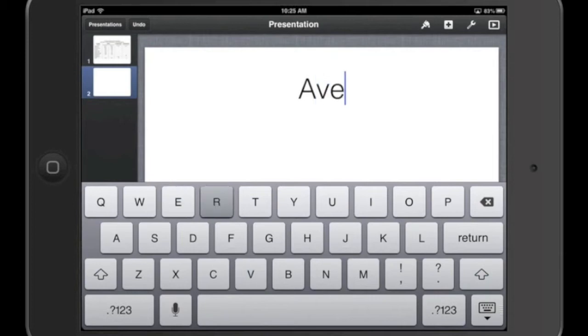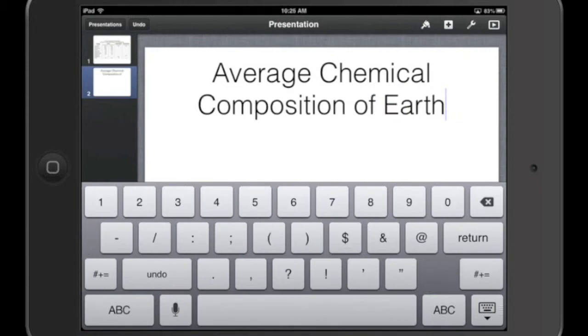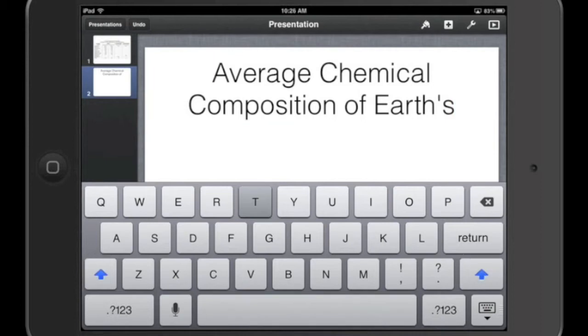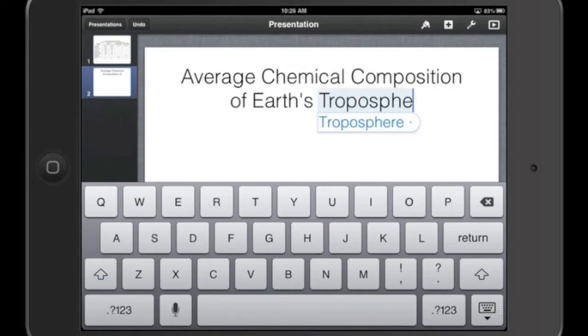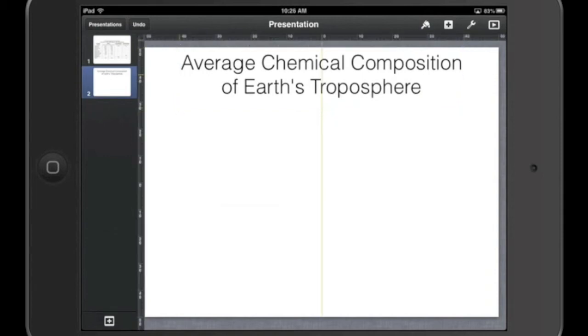So I'm going to title it first, Average Chemical Composition of Earth's, I need an apostrophe there, troposphere. Again, this is just the lower part of the atmosphere. So I have a title, and this is what the students would be doing, of course.